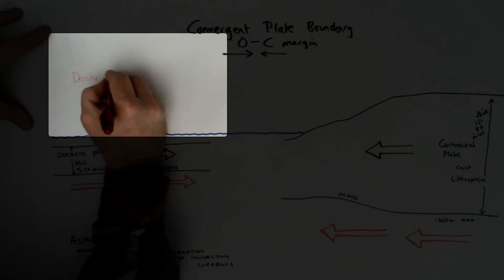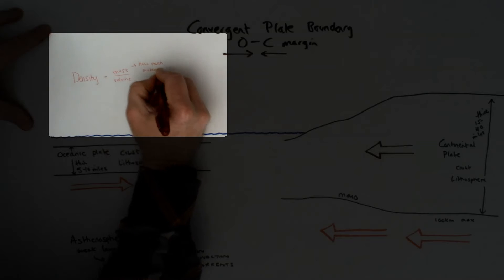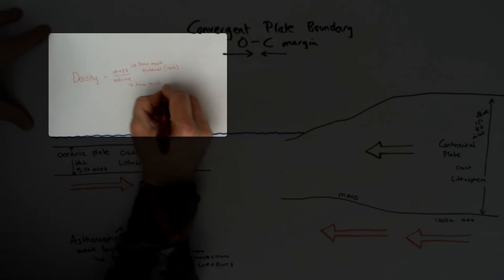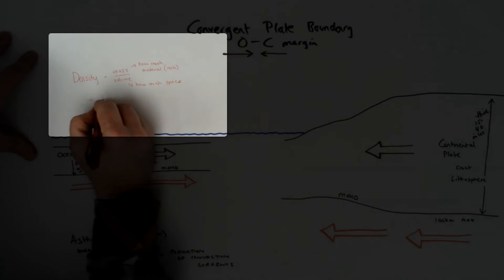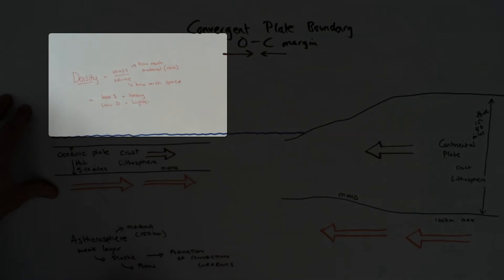Looking at how dense each plate is based on the composition of what it's made of. The ocean plate's composition versus the continental plate's composition. What's going to happen when they collide based on the density? Which one will sink, which one will float?